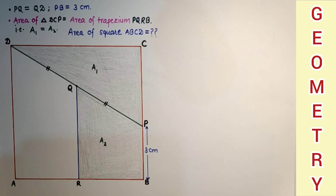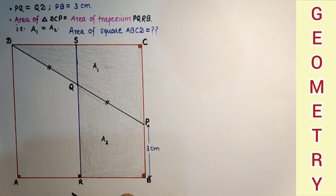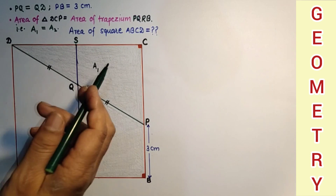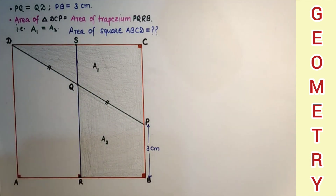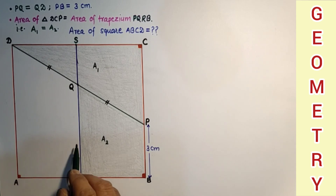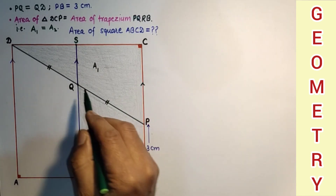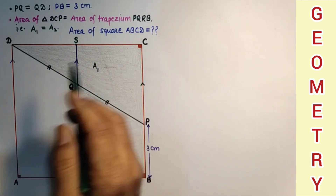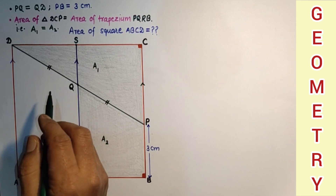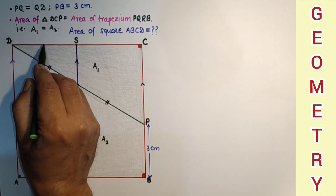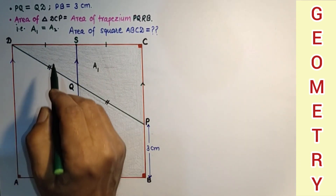The first method we are going to discuss is by extending RQ. I have extended RQ, which intersects DC at point S. Since ABCD is a square, all four angles are 90 degrees. It is given that QR is perpendicular to AB, and Q is the midpoint of PD. Since this angle is 90 degrees and the other is also 90 degrees, both lines are perpendicular, which means these two lines are parallel to each other. So RS is parallel to AD, and Q is also parallel to BC. In triangle DPC, since Q is parallel to PC, by the converse of the midpoint theorem, point S will be the midpoint of DC, and this angle is also 90 degrees.